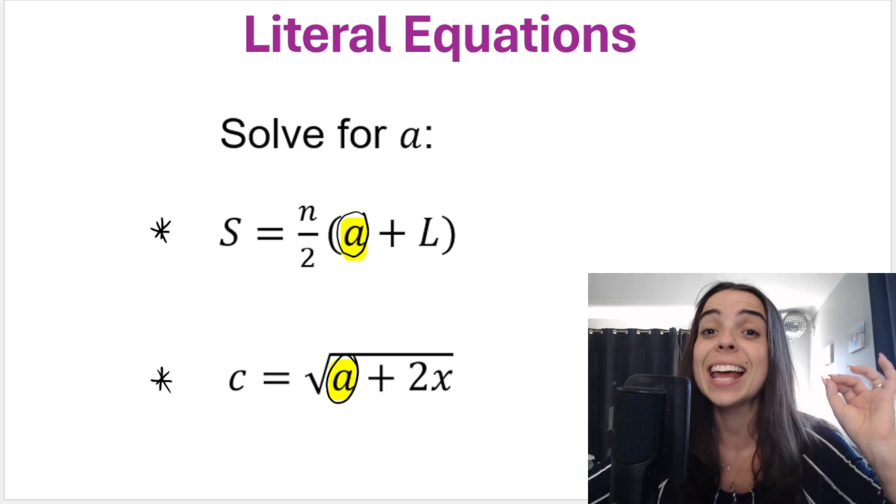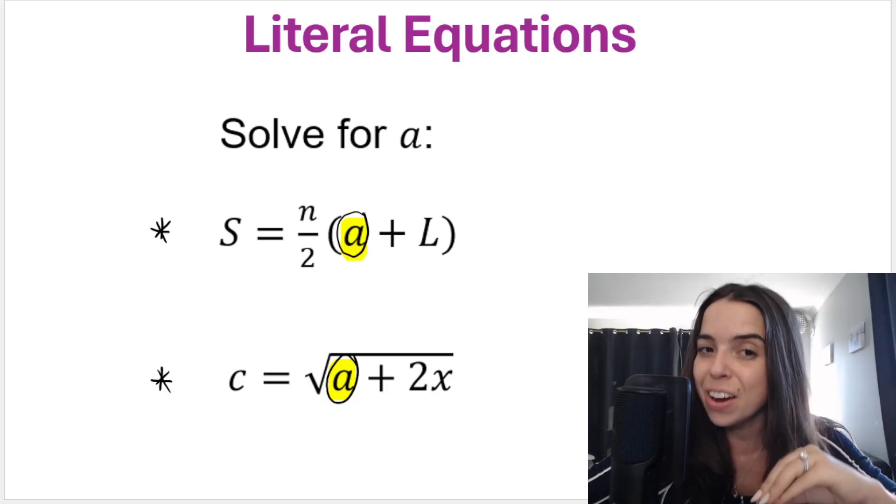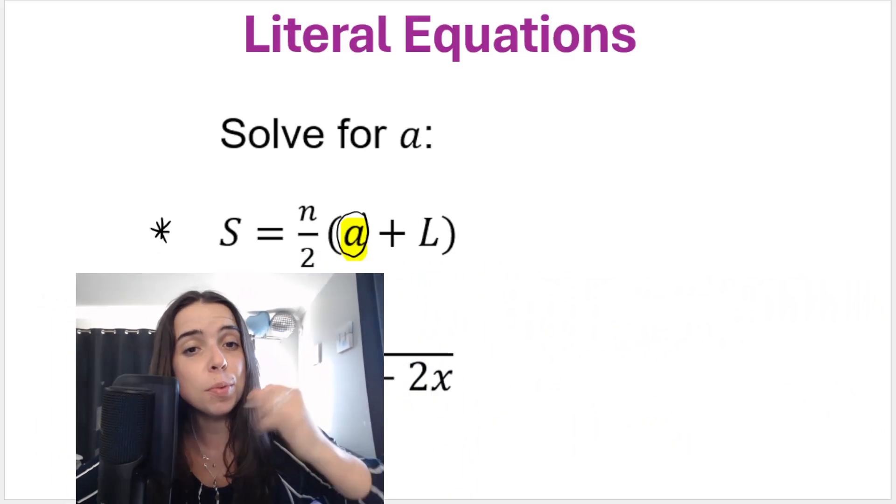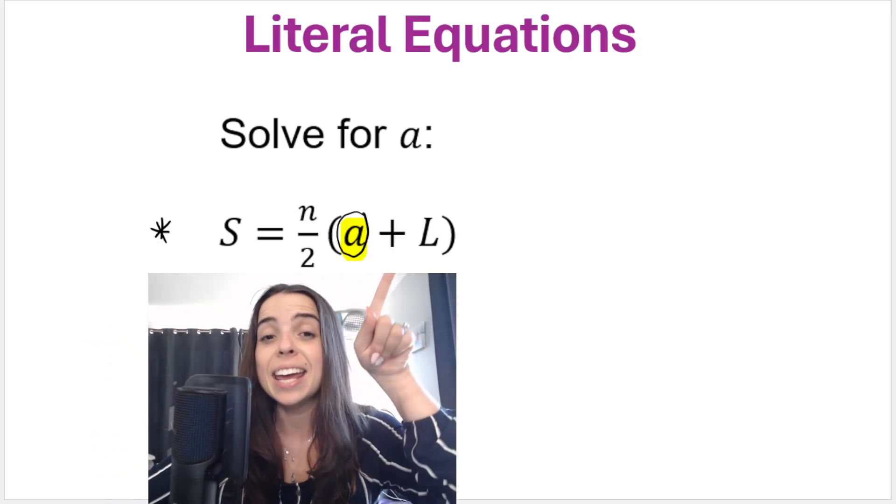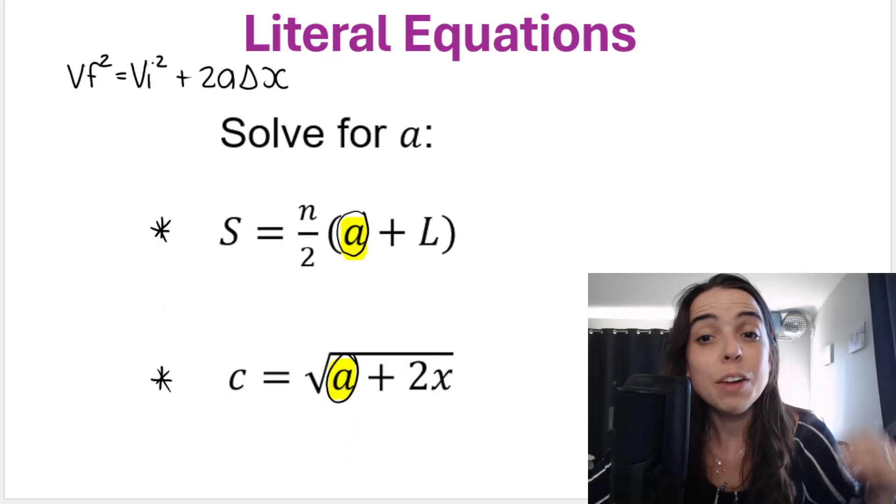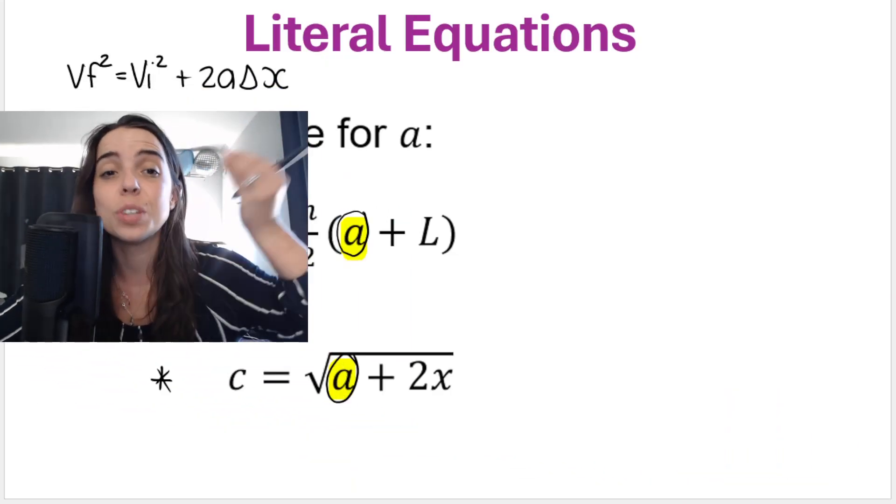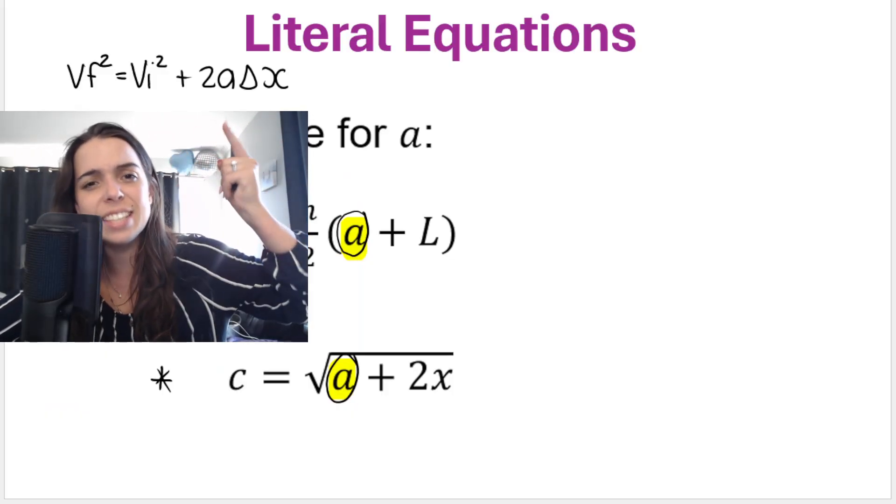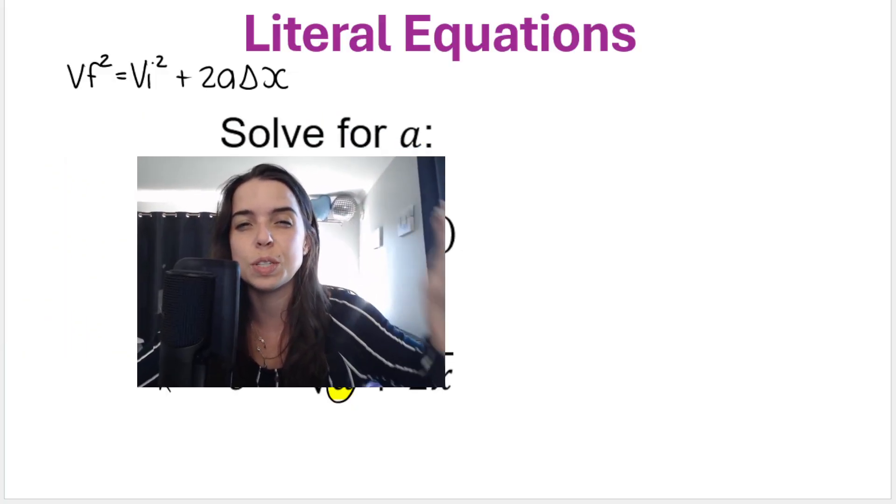In this lesson we'll be taking a look at literal equations. Now literal equations have more than one variable. For example, over here we can see s is a variable, an unknown, a placeholder if you will. We also have n, a, and l. And for example, if you're familiar with physics, then this is also basically a literal equation. We have final velocity, initial velocity, acceleration - all of these things are variables and they represent a different sort of physical quantity.